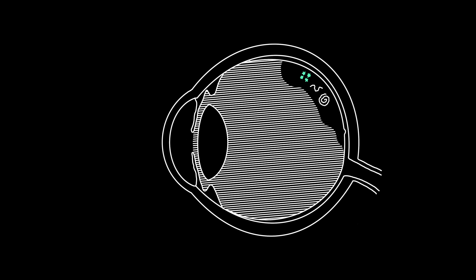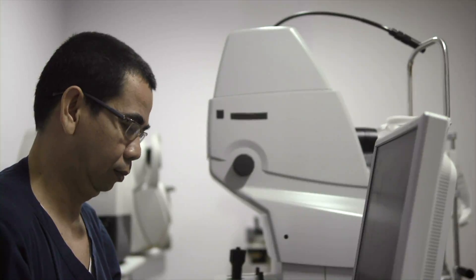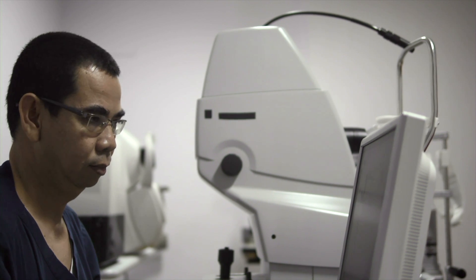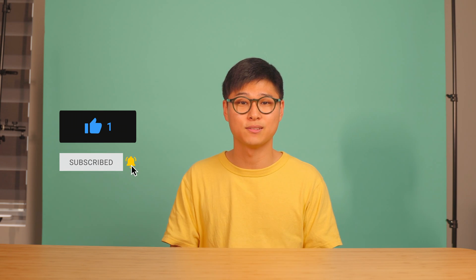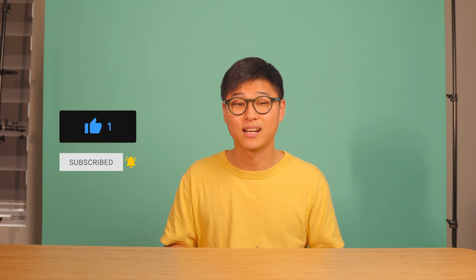In summary, floaters are little bits of protein, amyloid, and cells found in the vitreous jelly that create a shadow perceivable by the retina. Most of them are harmless, but they should still be monitored closely by your eye doctor in case they change. There are ways of treating them, but if the risks of treatment outweigh the benefits, then it's not going to be worth it. If you have any questions about floaters, leave them in the comments below. Consider liking this video and subscribing — thank you for watching.